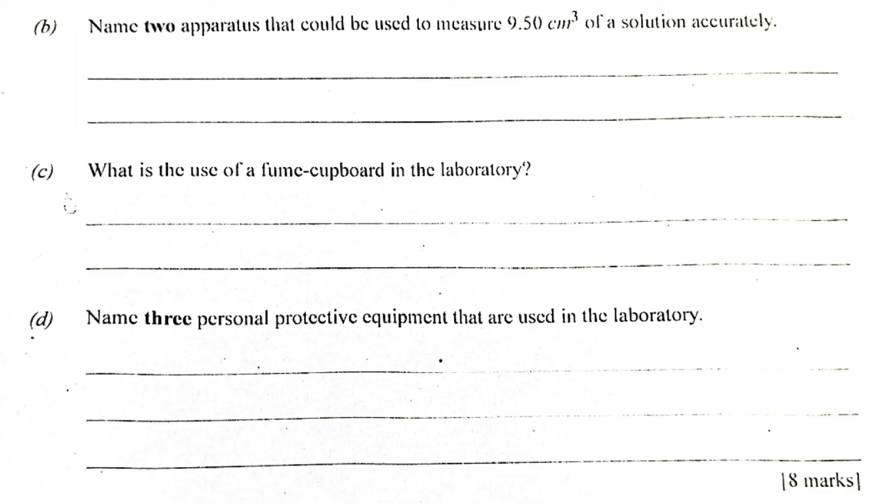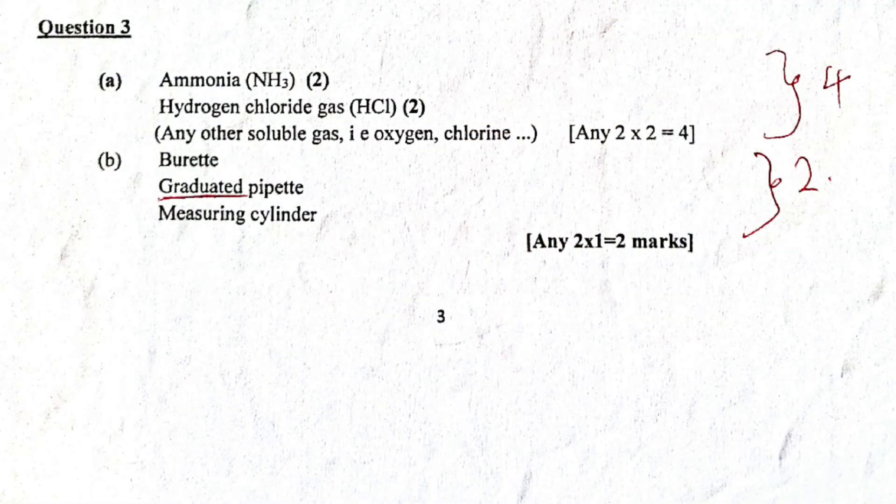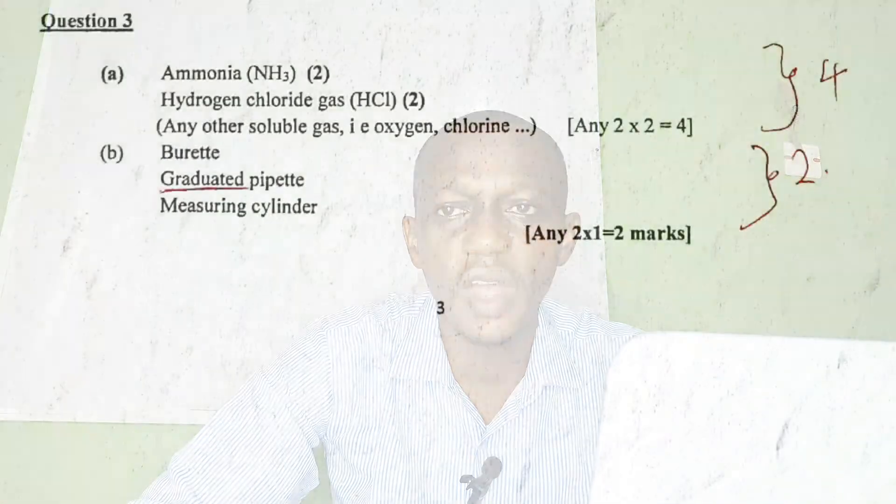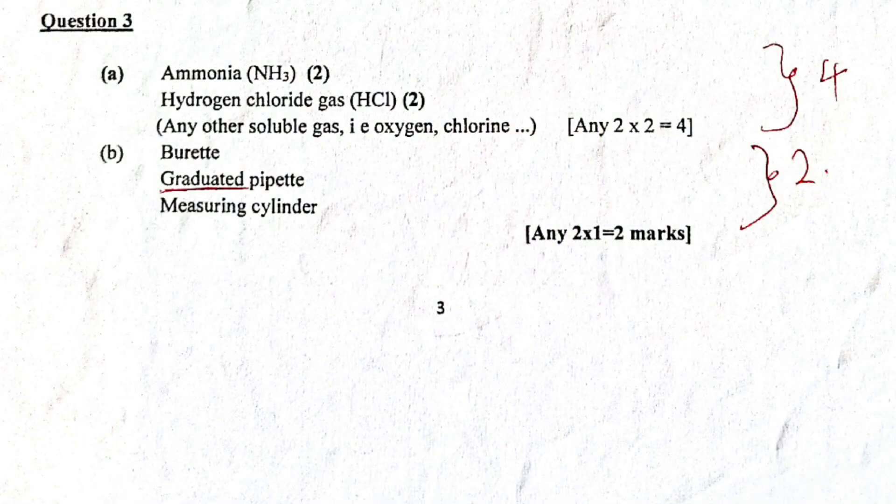Part B. Name 2 apparatus that could be used to measure 9.50 cm³ of a solution accurately. A lot of students are making mistakes here. If you mention pipette, pipette will not be marked. Yes. Because pipette most of the time is fixed. In the standard, it is 25 cm³. And is fixed as 25 cm³. Most are burette pipette. But if you mention graduated pipette, the graduated pipette has a lot of measurement graduations. So it means it can measure. Because they mention the amount specifically as 9.50. So you have to mention graduated pipette to be marked there. Measuring cylinder can also be measured. Can also be mentioned. So 1 mark for each of them. You can also mention any other thing and it will be marked. You can mention burette. Burette is also there. So any of them. Any 2. 1 mark. So 2 times 1. That's 2 marks over there.